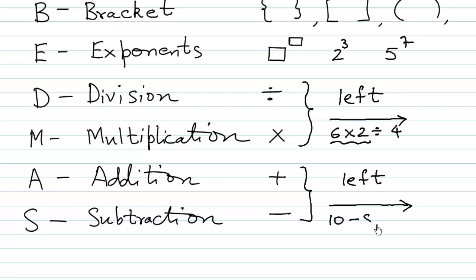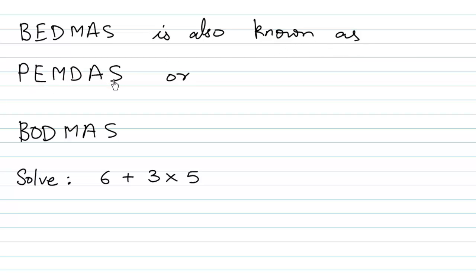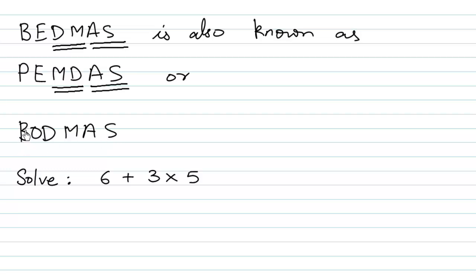For example, in 10 minus 8 plus 2, we carry out the subtraction first and then add 2 to the result. BEDMAS is also known as PEMDAS, where P stands for Parentheses — which is the same as brackets — and E stands for Exponents. Multiplication and Division can be done in either order left to right, as can Addition and Subtraction. It is also known as BODMAS, which stands for Bracket, Of, Division, Multiplication, Addition, and Subtraction.